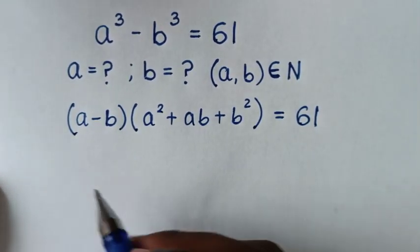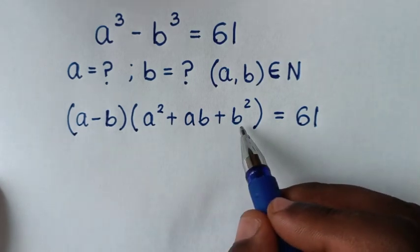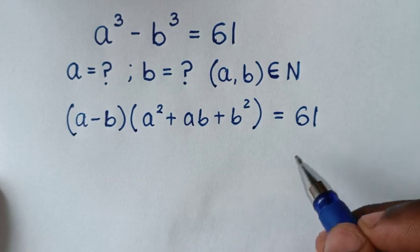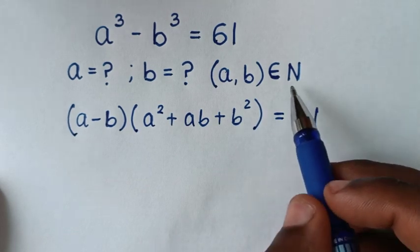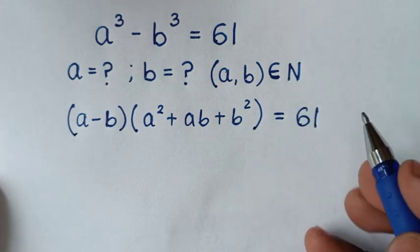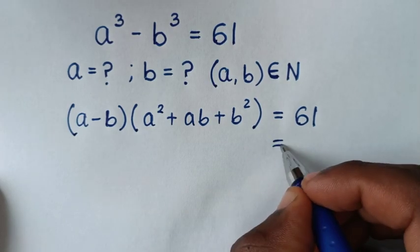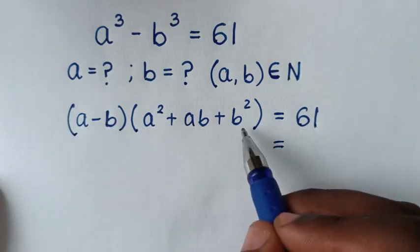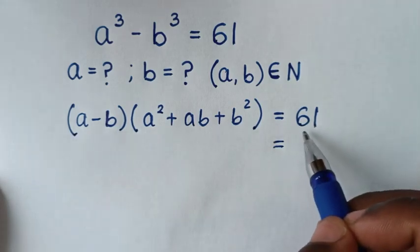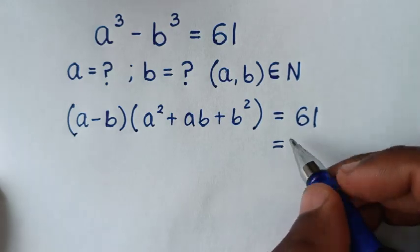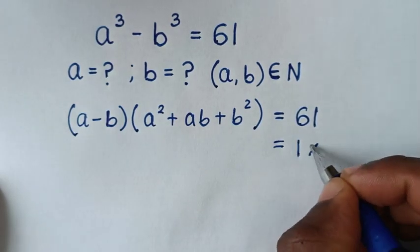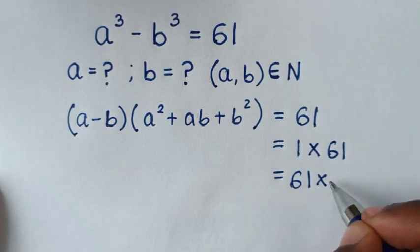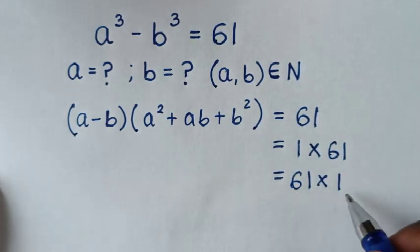Then, in the next step, because here we have a multiplication of this times this, and from this 61, which is a prime number and also a natural number — natural numbers are like 1, 2, 3, and so on — 61 is a multiplication of natural numbers which are also prime numbers. So 61 is either 1 times 61, or 61 times 1.